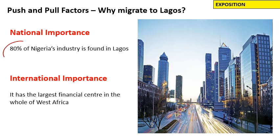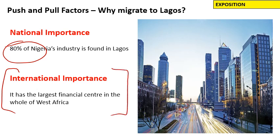Nationally, 80% of all Nigeria's jobs are found in Lagos. That means people in the countryside know they are much more likely to get a good job by moving to Lagos, where 80% of jobs are found. Internationally, Lagos has the largest financial center in the whole of West Africa. This means even people in other African countries may become international migrants and move to Lagos for jobs in banking and finance — well-paid tertiary economy jobs.